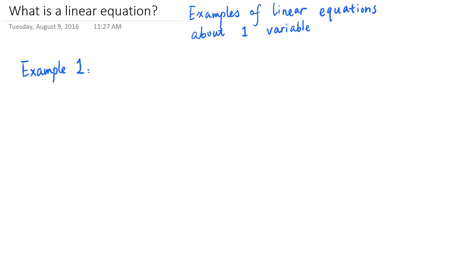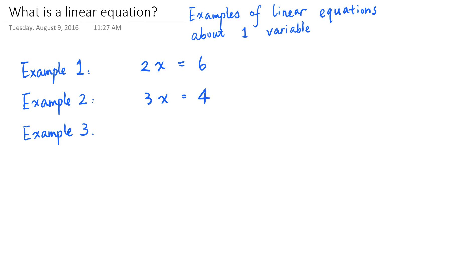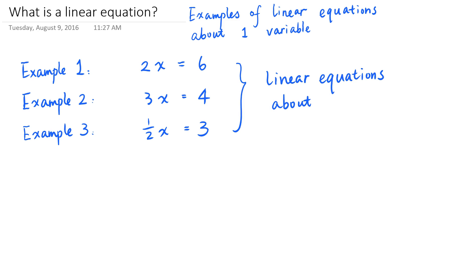For example, if you have one variable named x, a linear equation about the variable x looks like a number times the variable is equal to another number. So 2x equal to 6 is a linear equation about x. And so is 3 times x equal to 4, or half of x is equal to 3. These are all examples of linear equations about the variable x.